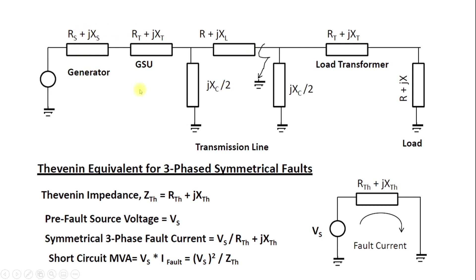In this case we have three impedances in series: the generator impedance, the step-up transformer impedance, and the transmission line impedance. We simply add them up to get the Thevenin equivalent impedance in the form of R_TH plus jX_TH, because R values are added with R and X values are added with X.